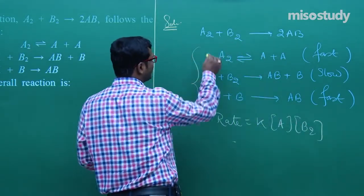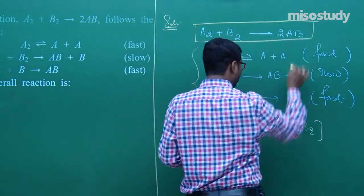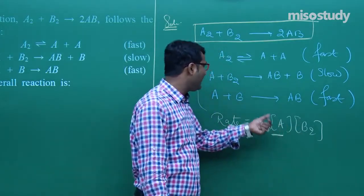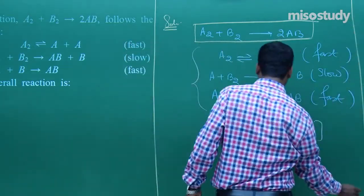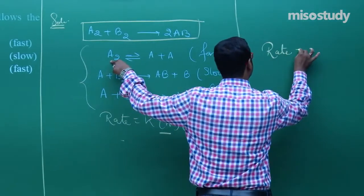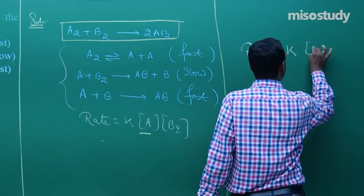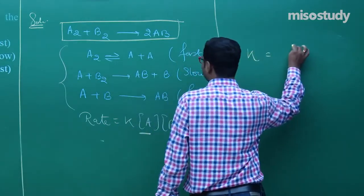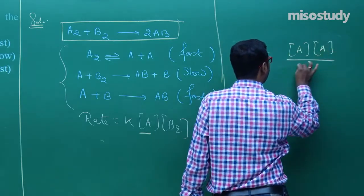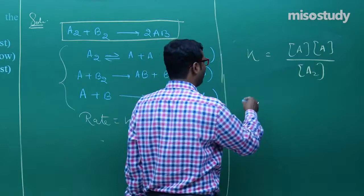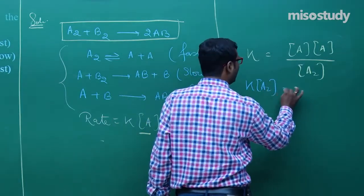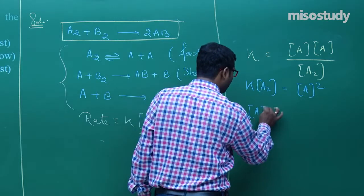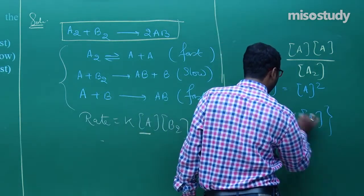But in the overall reaction, there is no involvement of A as a reactant — it is an intermediate. So we must replace A with A₂. From the equilibrium of step 1: K_eq = [A]²/[A₂], so [A] = K^(1/2)[A₂]^(1/2). Now substituting this into the rate expression.